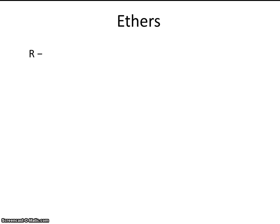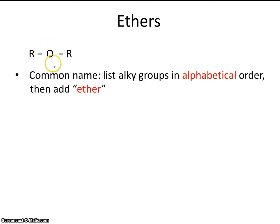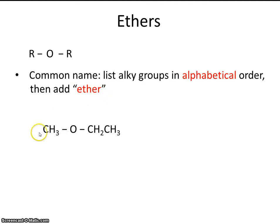Let's look at ethers. Ethers have two R groups with an oxygen in between them. To name them, list the alkyl groups in alphabetical order, then add the word 'ether.' For example, one carbon is methyl and two carbons is ethyl. Ethyl comes before methyl alphabetically, so we call this compound ethyl methyl ether.